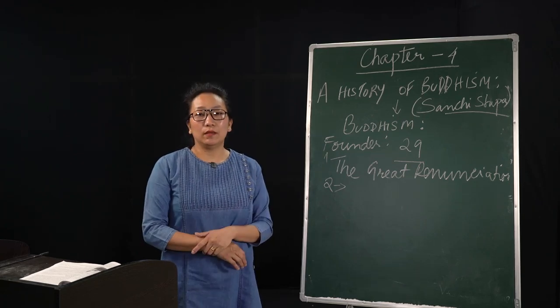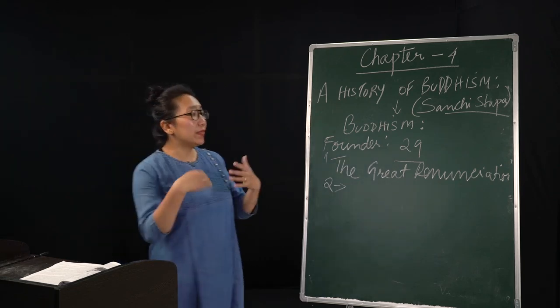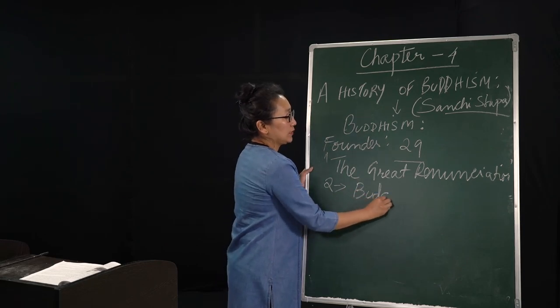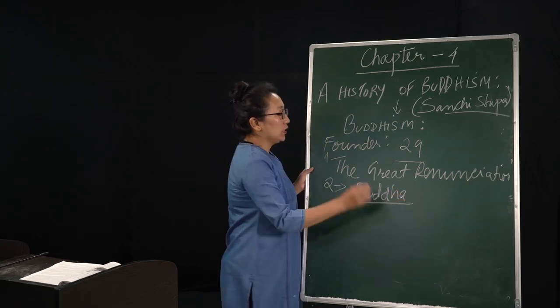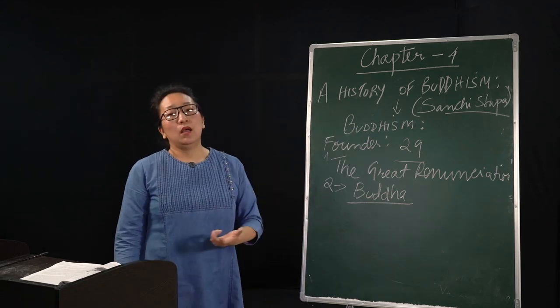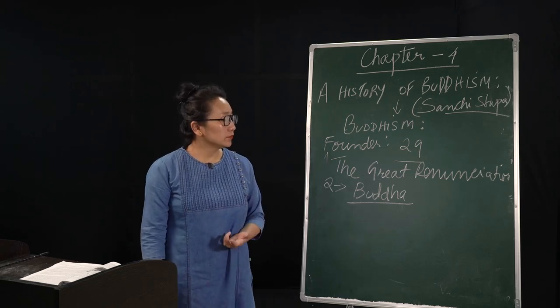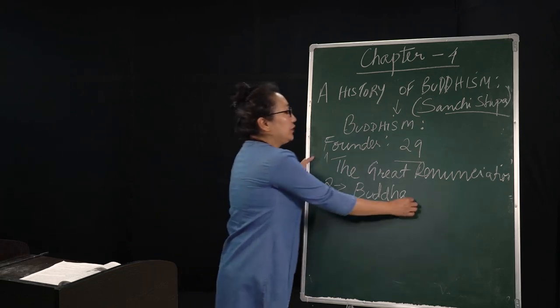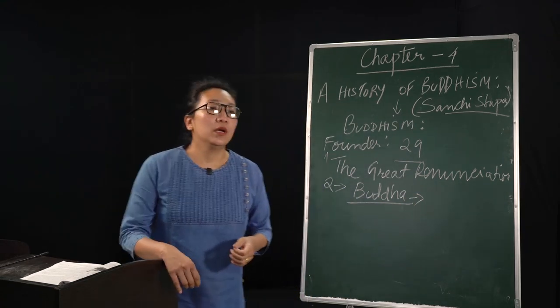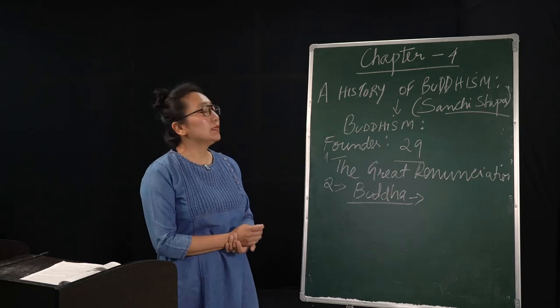This incident in Bodh Gaya where he received enlightenment, from that time onwards he received the title name, not as Siddhartha, but his name was changed into Buddha, as we know him, and Gautama as the religious preacher of this religion. After this enlightenment, he got the courage to go around and start preaching his Buddhist sermon.